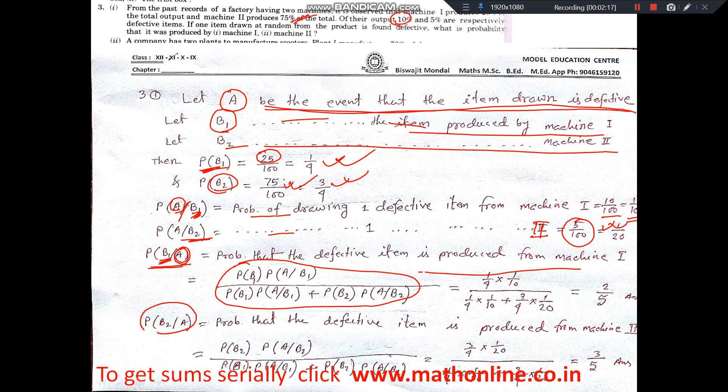Similarly, this one is for the defective item produced by the second machine. This is the required formula. You put the values and get the answer. That's all.